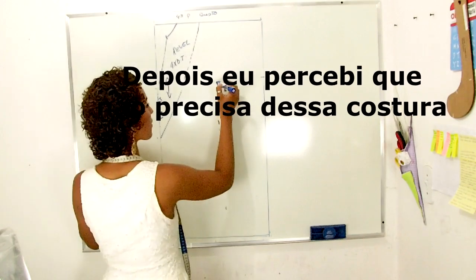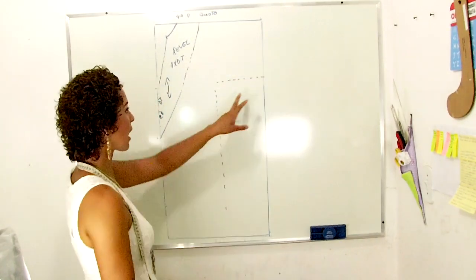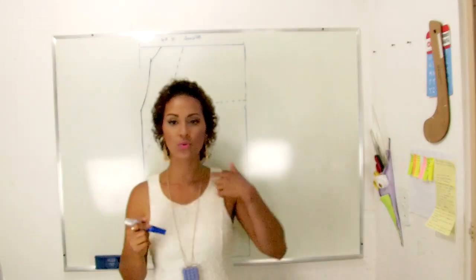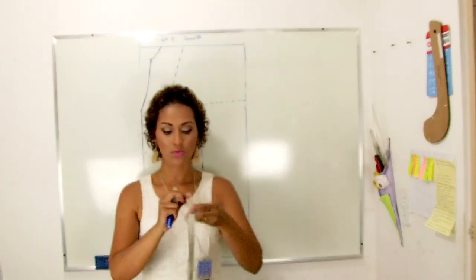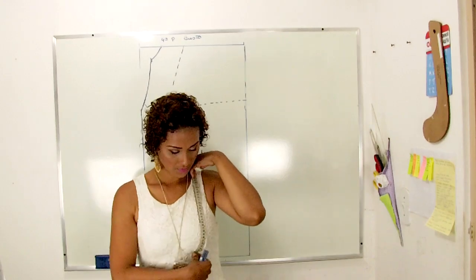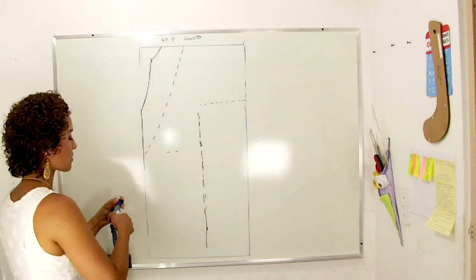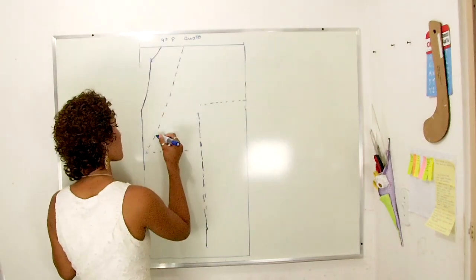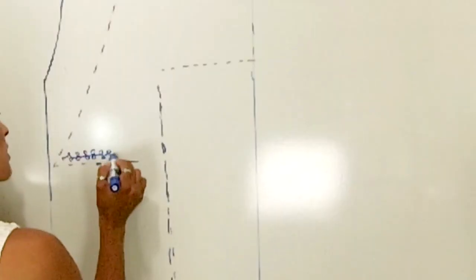Então, aqui vai entrar aquela costura. E aqui também. Por isso que eu marquei a altura da manga. Aí aqui, mais ou menos, abaixo do busto, tem um franzido. Não precisa nem fazer um recorte. Vou botar 39. Aqui na altura de 39, a gente pode fazer uma marcação de colocar um elastec aqui, e aí a gente costura a tirinha de bordado aqui, com um bordadinho aqui.